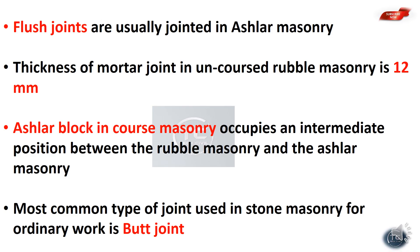Flush joints are usually used in ashlar masonry. In the early class we covered types of masonry: ashlar masonry and rubble masonry. Flush joints are combined with ashlar masonry.